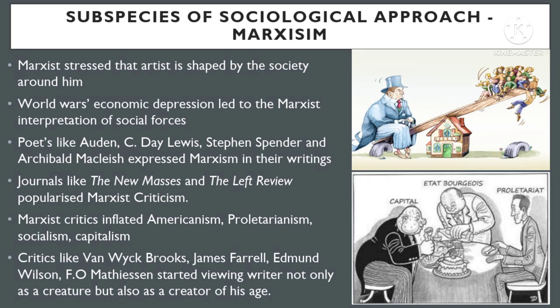The Marxist interpretation of literature is a subspecies of sociological criticism, as both stress the point that artists are shaped by the society around them. World Wars and the consequent economic depression led to the Marxist interpretation of social forces. The economy of Europe broke down on account of the two world wars. Poets like Auden, C. Day-Lewis, Stephen Spender, and Archibald MacLeish expressed their Marxist thoughts in their writings.